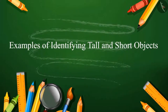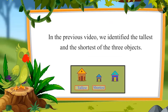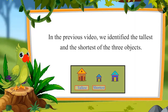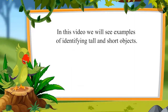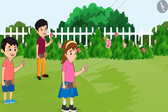In the last video we identified the tallest and the shortest of three objects. In this video we will see examples of identifying tall and short objects. Today Chotu, Aarti, and Sonu have come to fly kites in the park.